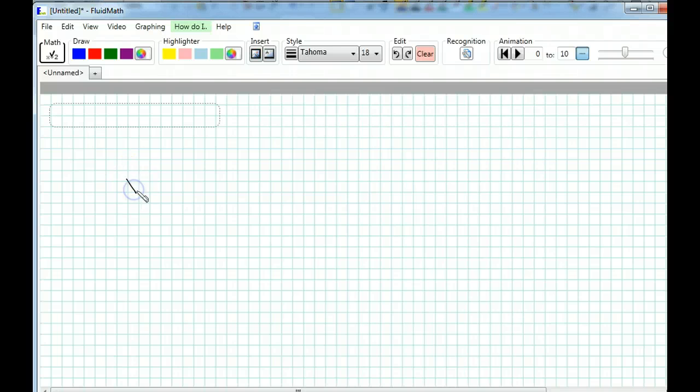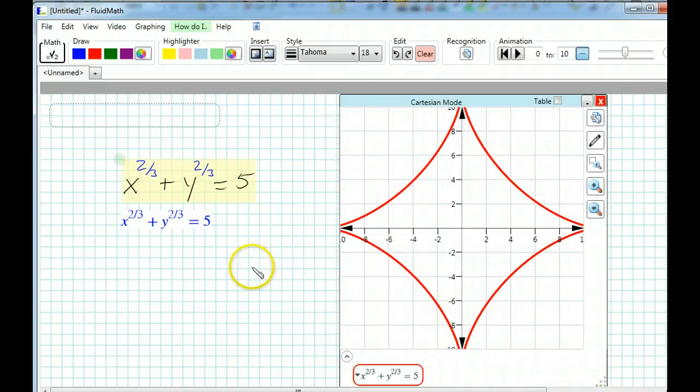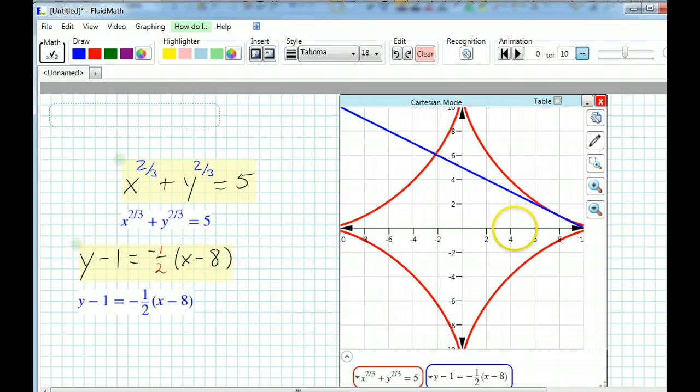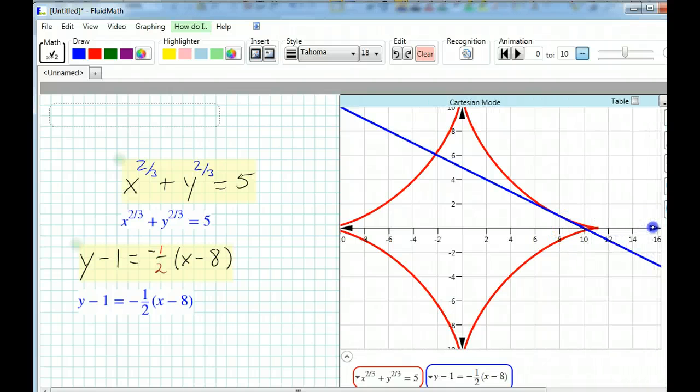My original function was x to the 2/3 plus y to the 2/3 equals 5. And my tangent line was y minus 1 equals negative 1/2 times x minus 8. And you can see that, yeah, this tangent line does hit this relation at the point 8 comma 1.